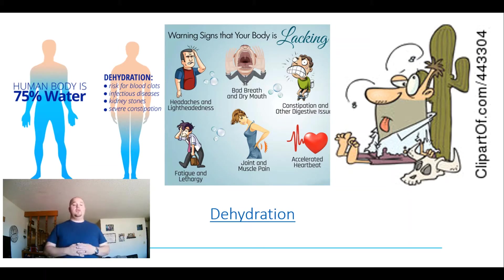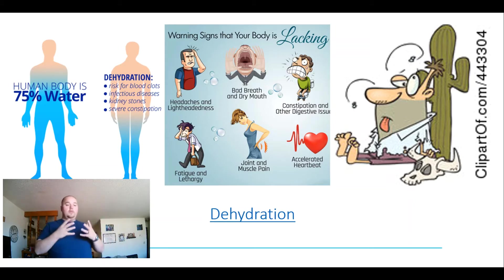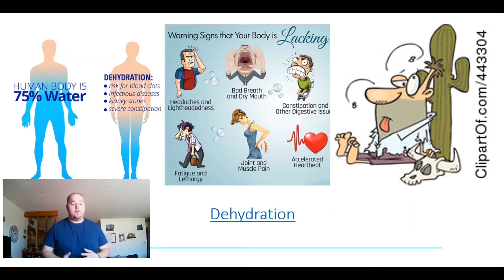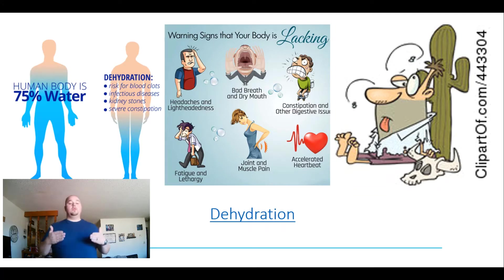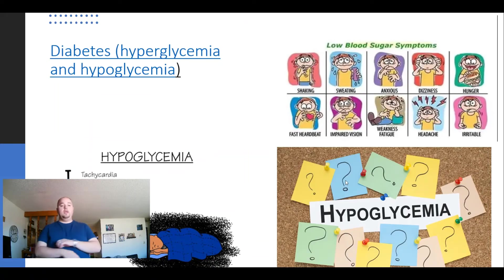If you see someone with dehydration, we're going to look for skin turgor — pull up the skin and it will stay tenting. They might have a dry furrowed tongue that you can see when you ask them to stick it out. They might have a low or high blood pressure because their body is trying to compensate. When fluids are given from an ALS standpoint, those individuals will start to get better. Dehydration is another issue we see with altered mental status emergencies.